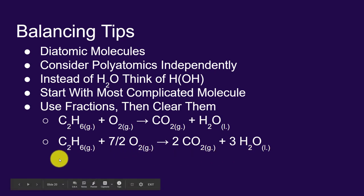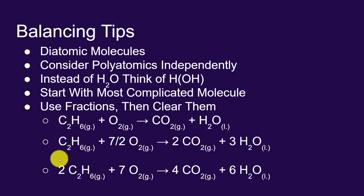What we can do now is clear the fraction. Just multiply everything by 2. And when you do that, you get a statement that looks like this: 2, 7, 4, 6. Here is our balanced equation.